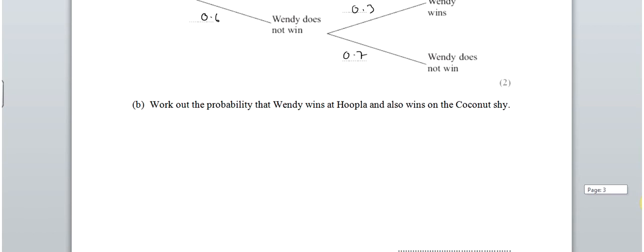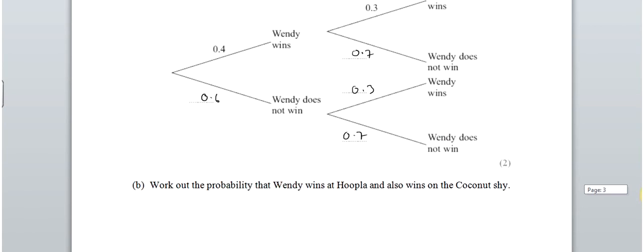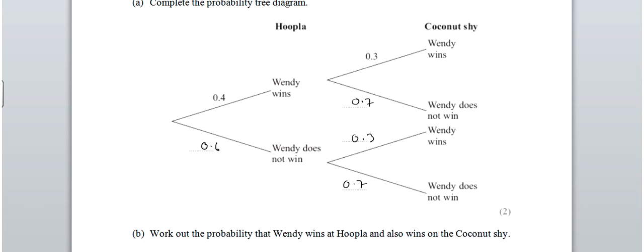Okay. Part B. The probability she wins at hoopla and also on the coconut shy. So she wins at hoopla and she wins on the coconut shy. So when you're going this way through the tree you multiply. So that's 0.4 times 0.3. And be very careful here. 0.4 times 0.3 is 0.12. It's not 2.1.